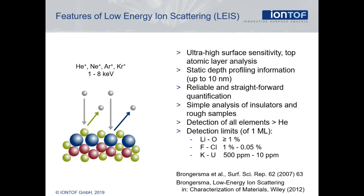First of all, LEIS determines the elemental composition of the outermost atomic layer. This is done by scattering noble gas ions off of the surface atoms and measuring the energy loss in this collision. From the energy loss, the mass of the surface atom can be determined.